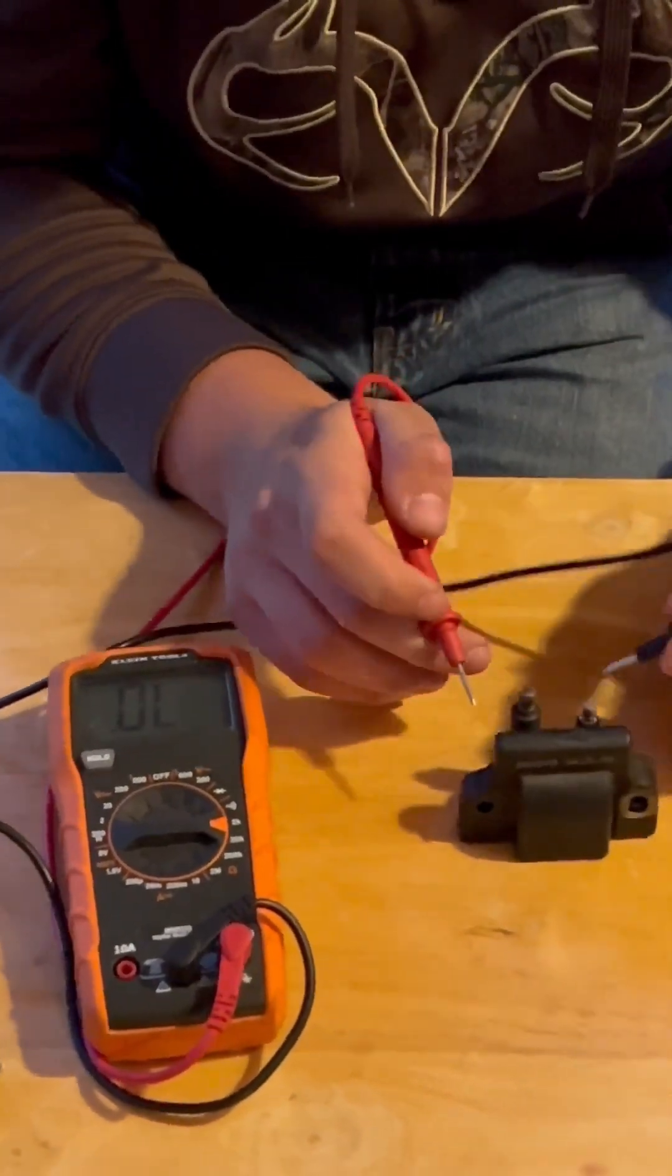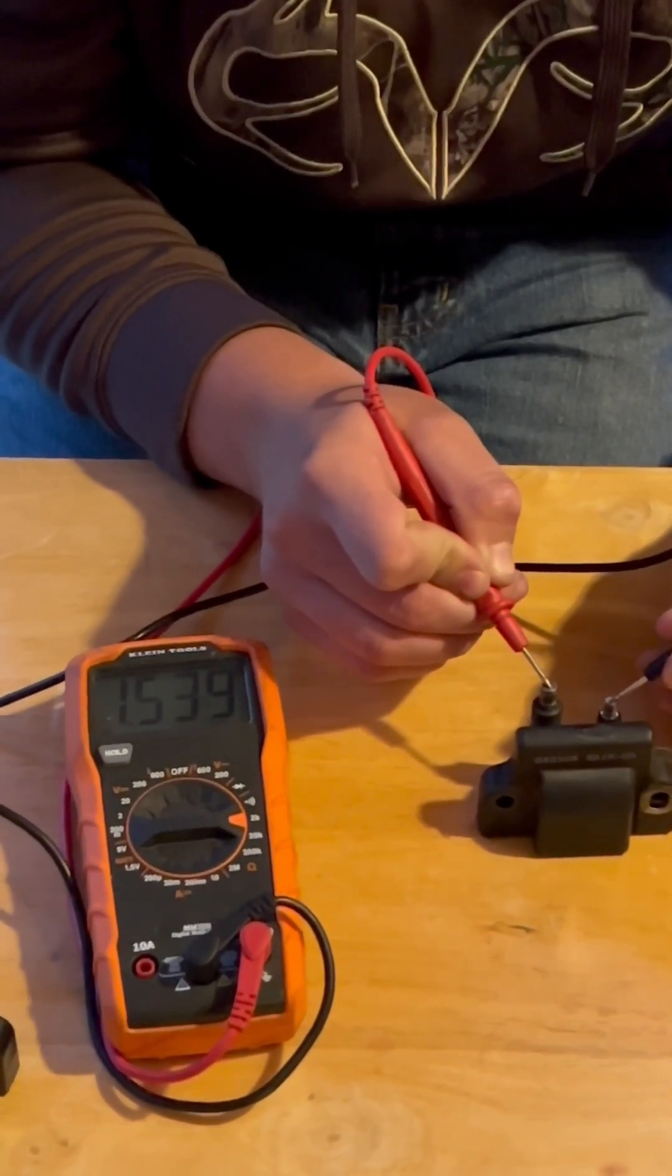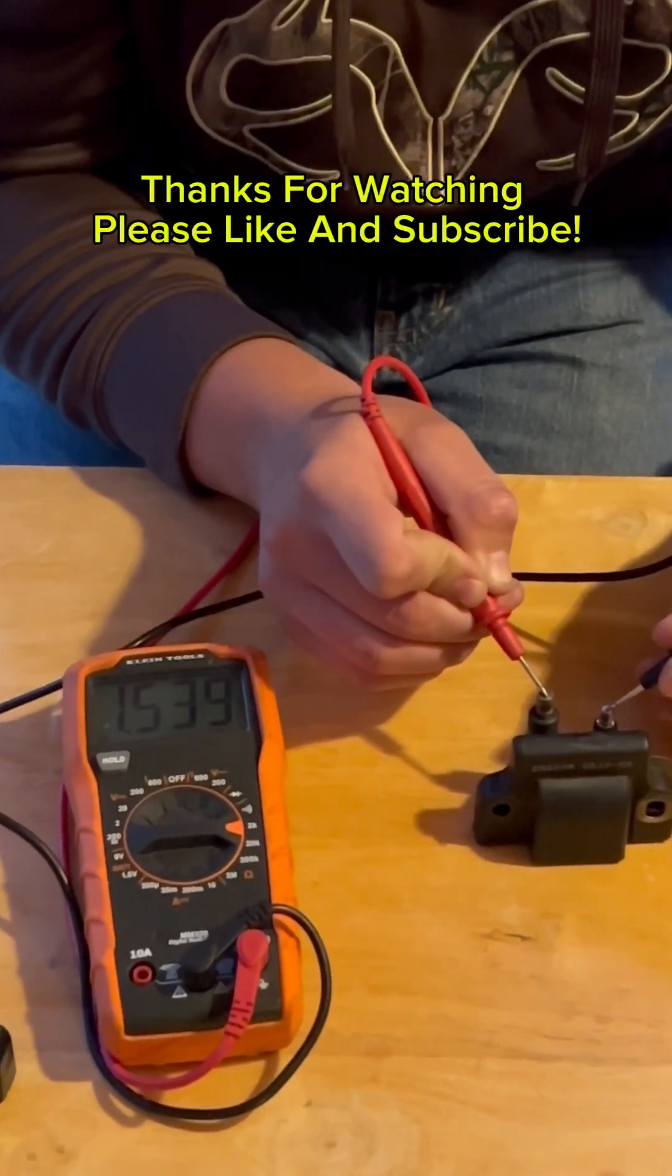Negative on the primary, hot onto the spark plug. This coil is not good because it's over the 275 plus or minus 50. It's reading 1.5.